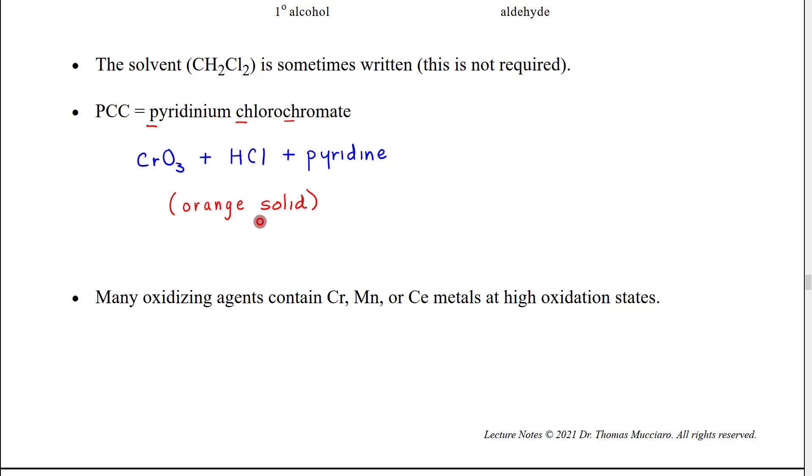Pyridinium chlorochromate is actually formed in this way. You put chromium trioxide which is a solid, you mix it with hydrogen chloride and pyridine. These form a reaction where you get sort of a complex between the pyridine, the chloride ion, the hydrogen and it precipitates out as an orange solid.